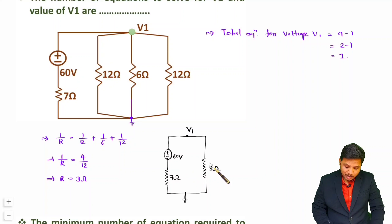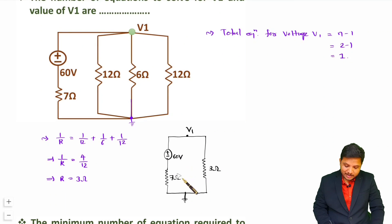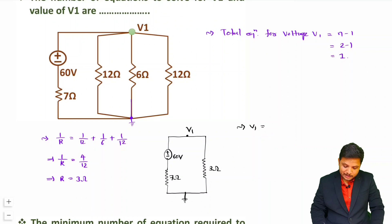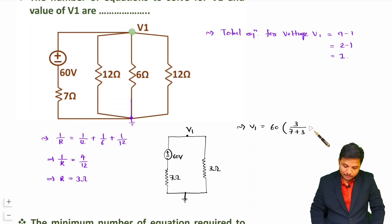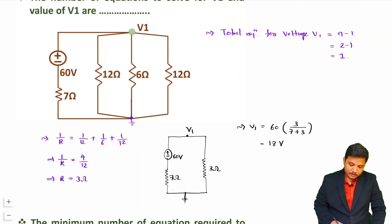Now how do we identify v1? V1 is the voltage across the 3 ohm resistor. A 60 volt source is connected, so the voltage divides between 7 ohms and 3 ohms. Using the voltage divider rule, voltage across 3 ohms equals 60 multiplied by 3 divided by (7 plus 3), which gives 60/10 times 3 equals 18 volts. So we needed just one equation to get v1.